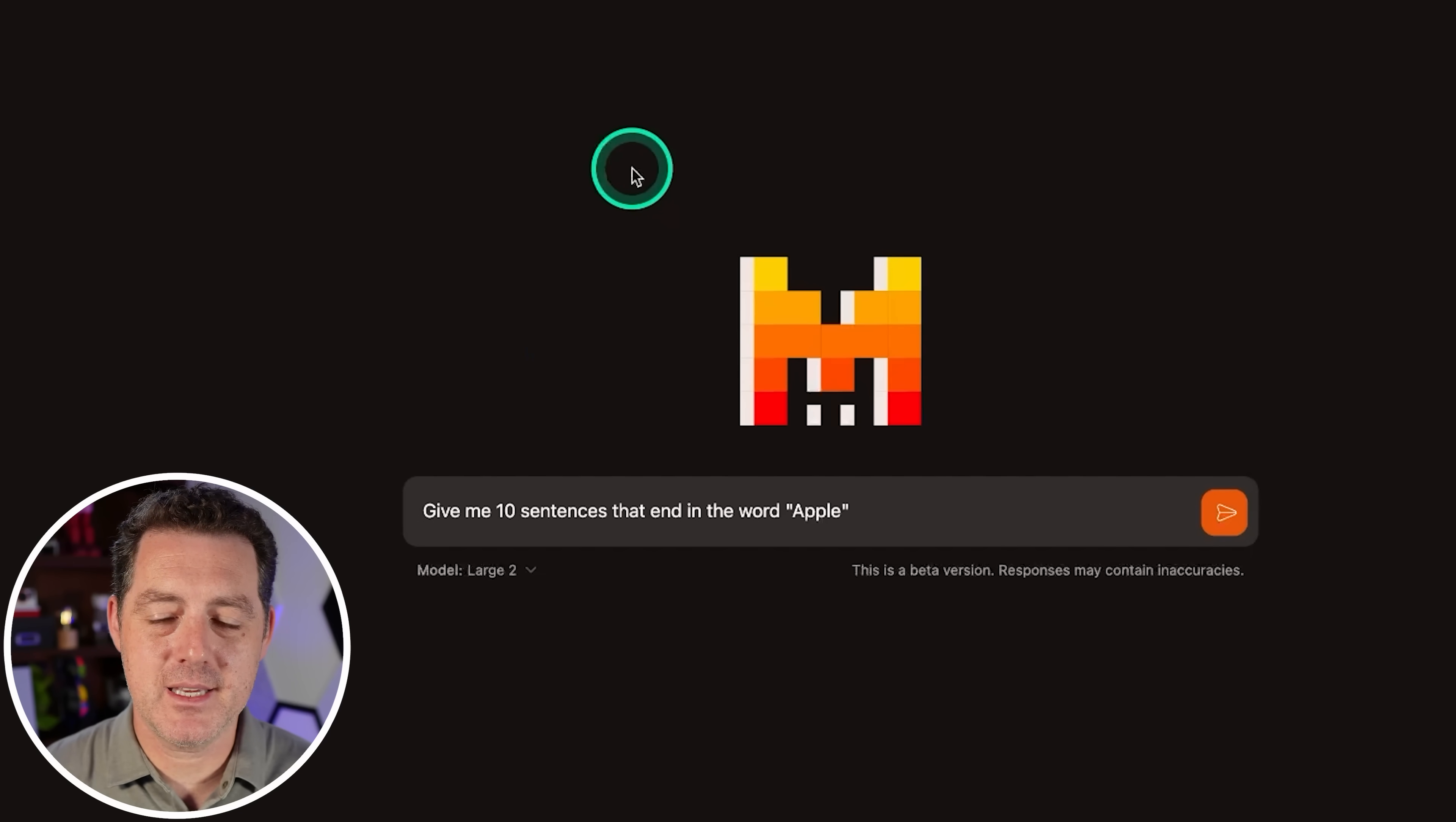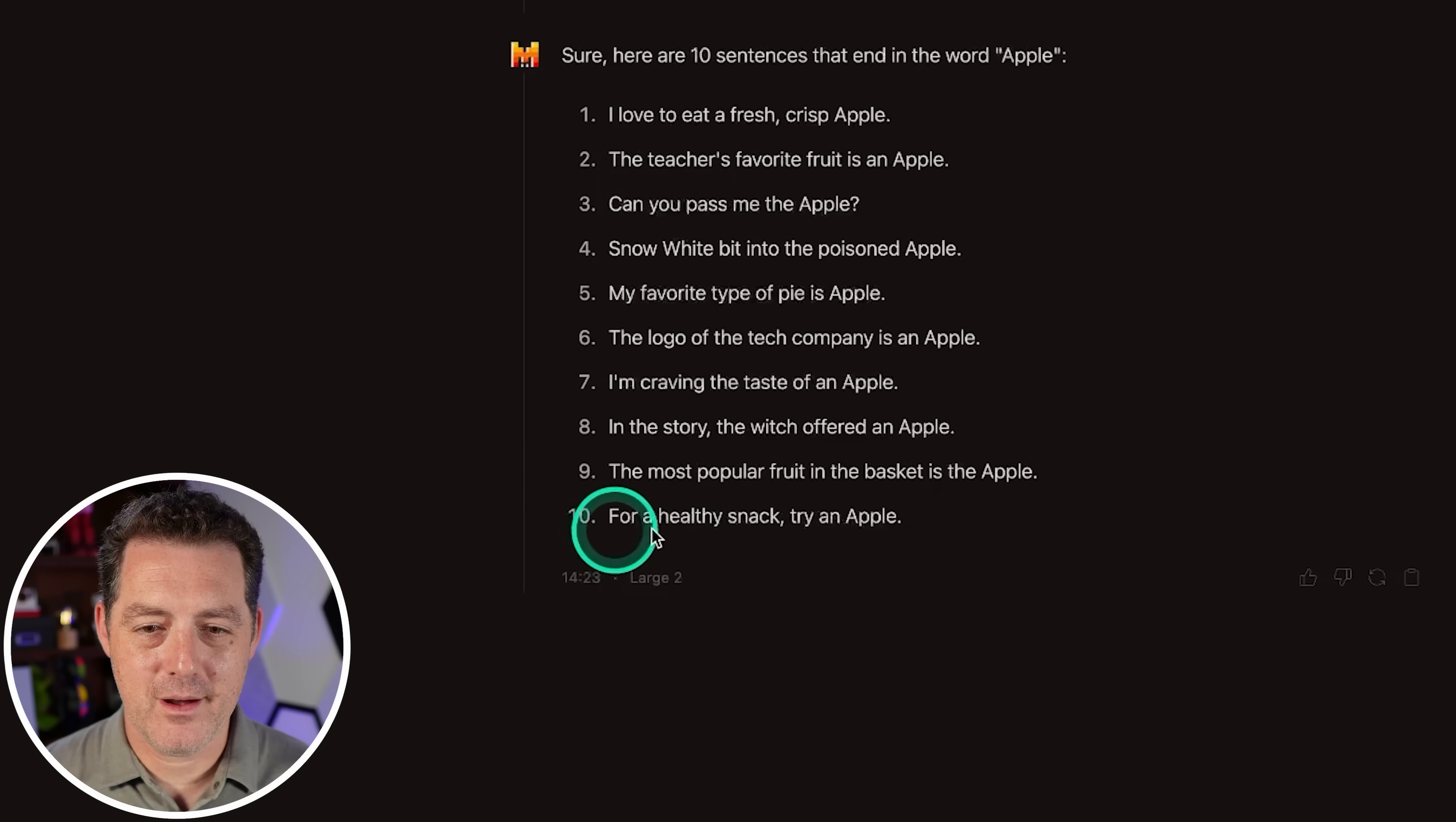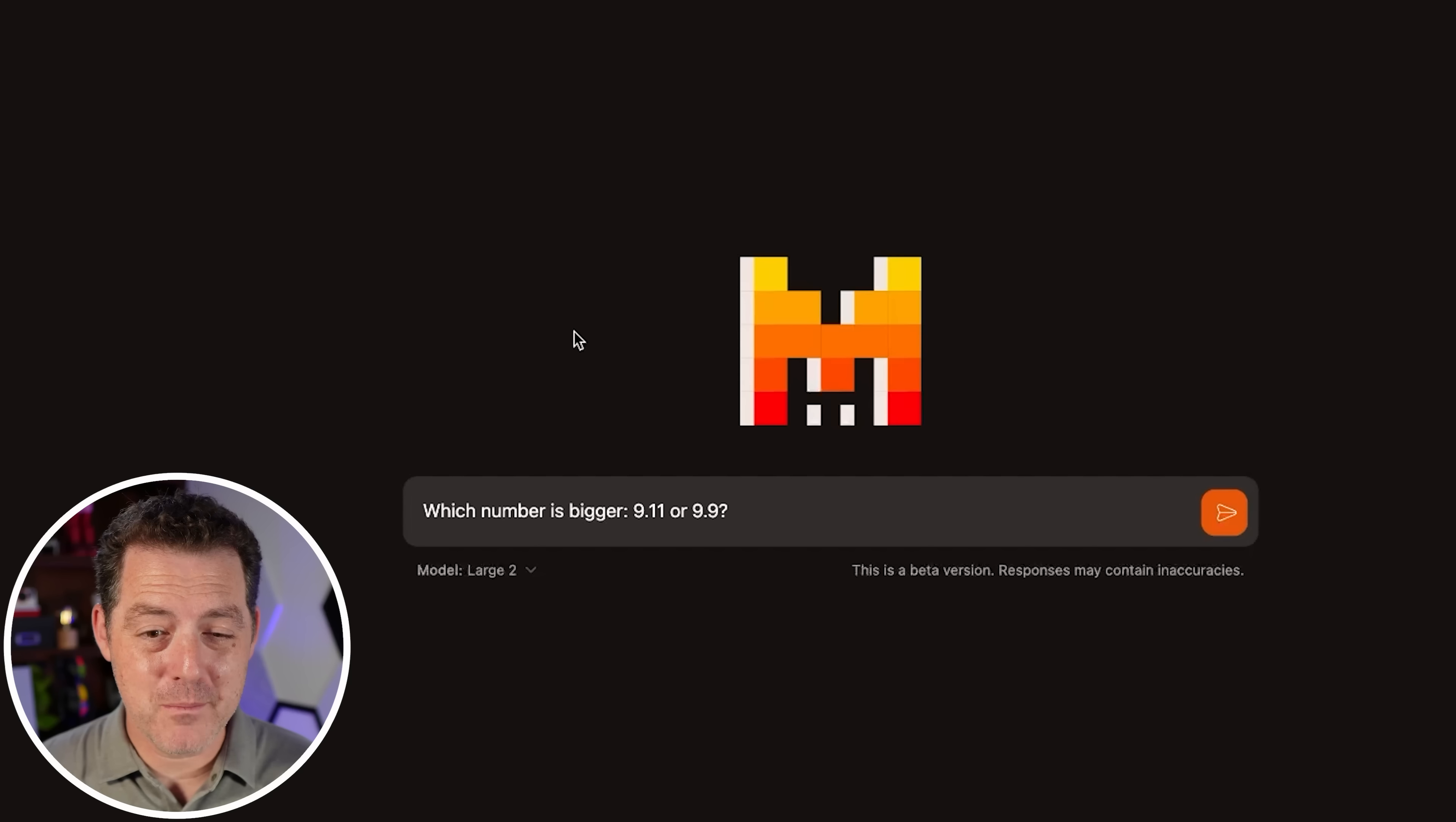All right. Let's see another one of these ones transformer models just have a lot of trouble with. Give me 10 sentences that end in the word apple. All right. I think it got it. Yep. Okay. Got it right. Very nice. So far it actually has the same exact score as Llama 3.1 405B. It's gotten every single one right that that model got right. This is the first question that 405B got wrong.